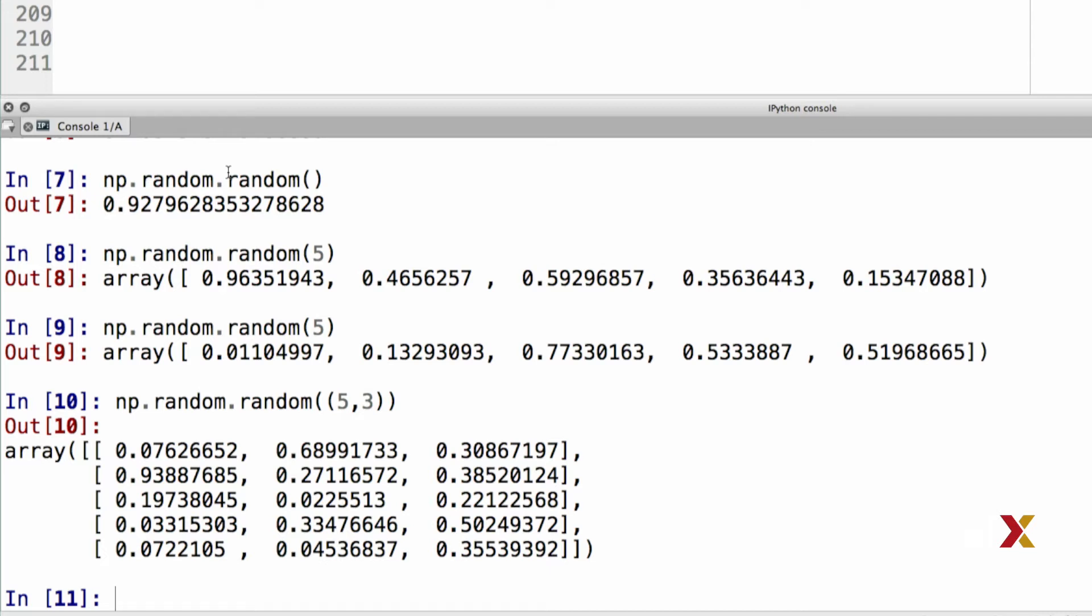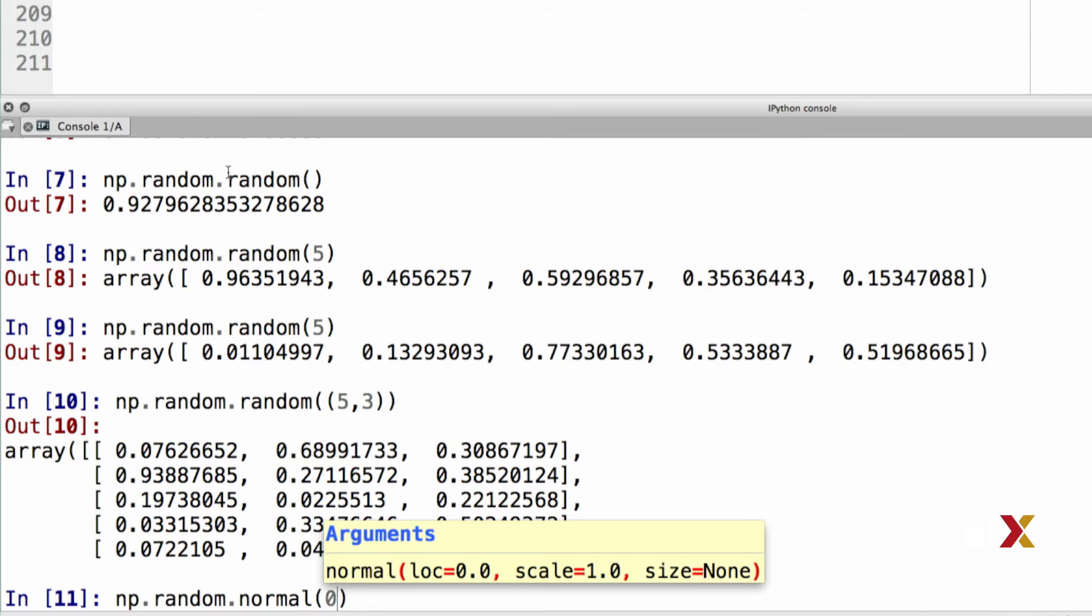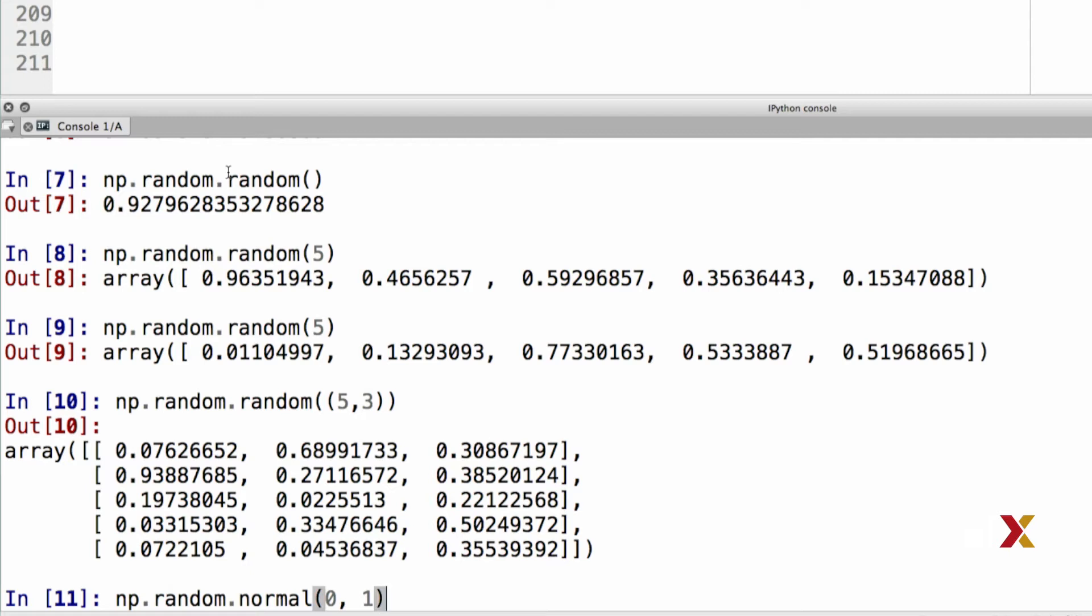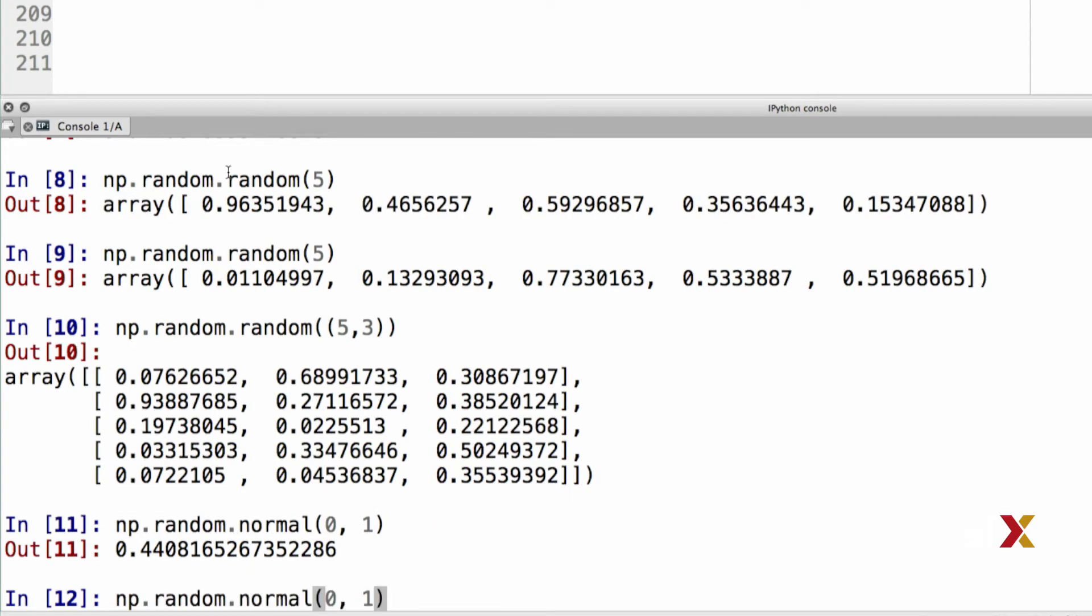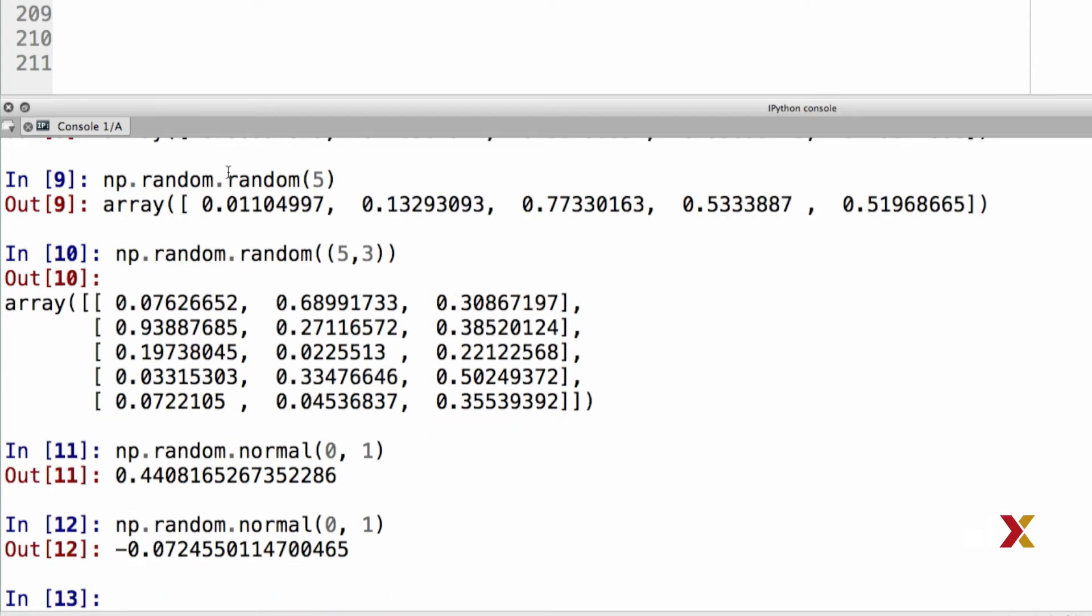To generate random numbers from the standard normal distribution, or from the normal distribution in general, we will be using the np.random.normal function. The first argument is the mean of the distribution, in this case 0, and the second argument is the standard deviation, which is equal to 1. Using this syntax enables us to draw one realization, one number, from the standard normal distribution.